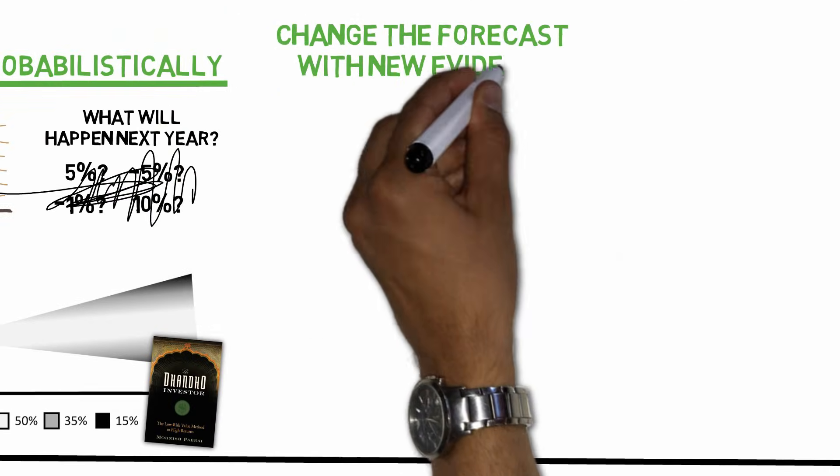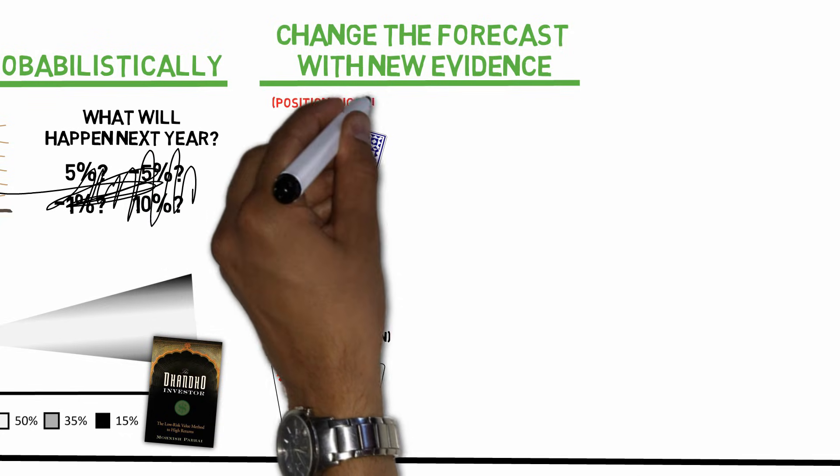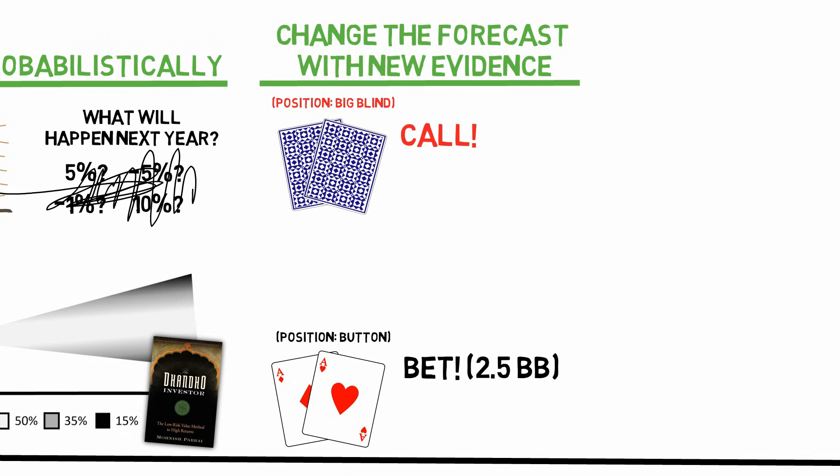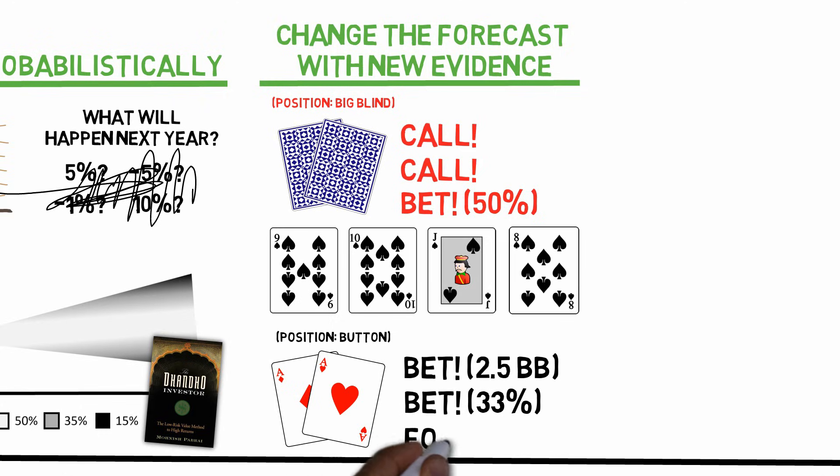Change the forecast with new evidence. Say that you are dealt 2 aces in poker, the best starting hand possible. You decide to bet, and you are called by one of your opponents. The first three cards on the table are the following: 9 of spades, 10 of spades, and jack of spades. He checks, you bet, and he calls. The fourth card is an 8 of spades. Your opponent decides to bet. Should you call this bet, or not? Your initial forecast was that you were going to win this hand easy, but clearly, you must factor in the new evidence. You are beaten by an awful many straights and flushes, and should definitely fold this hand. You should make the best forecast today, regardless of what you said yesterday. More on this in the final takeaway.